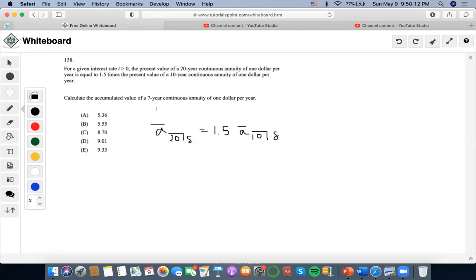So calculate the accumulated value of a 7-year continuous annuity. So that would mean we would have to find this amount. So that means we would have to find out what the force of interest is by using these values.